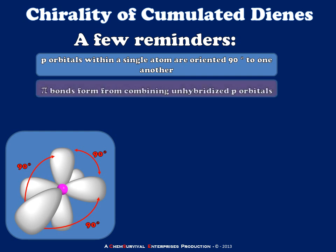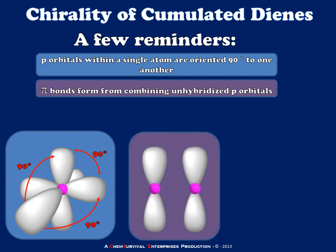The next reminder is that pi bonds can only form when you combine unhybridized p orbitals into pi molecular orbitals. When this is done, the new pi bond forms not on the axis between the two nuclei, but rather wrapping around it, as is depicted below.